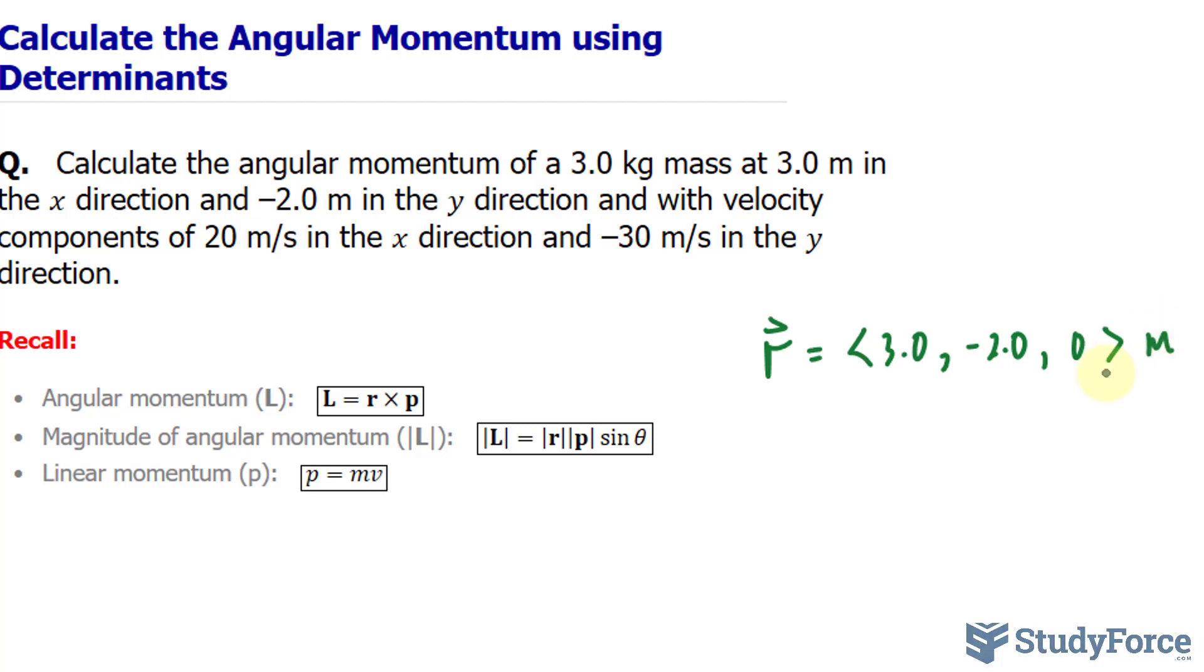Now for the vector p, which represents the linear momentum, linear momentum is calculated by taking the mass times the velocity. Velocity is a vector on its own. So the vector p equals a mass of 3.0 kilograms multiplied by the 3 components of vector v. We've been told the x and y components of vector v.